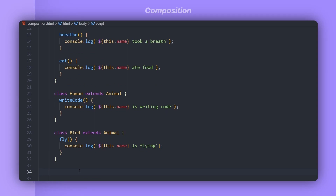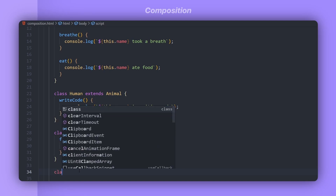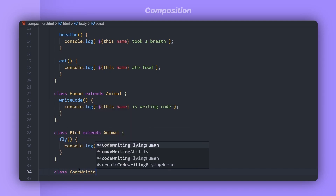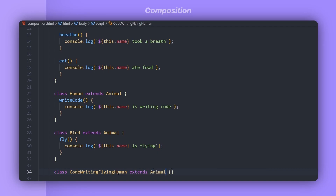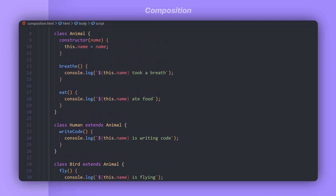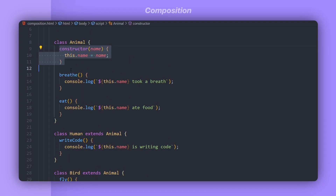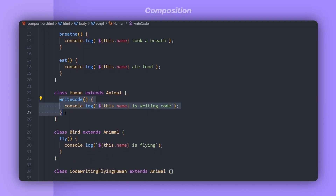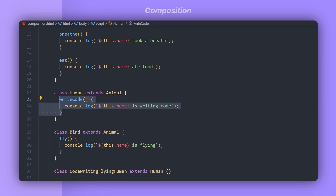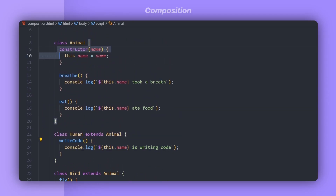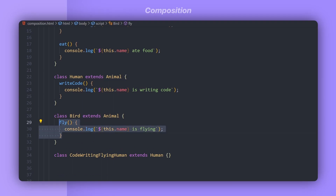Now let's say in future I want to create a new class that is a code-writing flying human. If I extend from the Animal class, the code-writing flying human will have access to the features of the Animal class, but we will still have to duplicate the writeCode and fly methods. If we extend to the Human class, the code-writing flying human will have access to the writeCode method and the Animal features, but it still cannot fly. So there is no good way around this — you will have to duplicate some code, and that's a problem with inheritance.